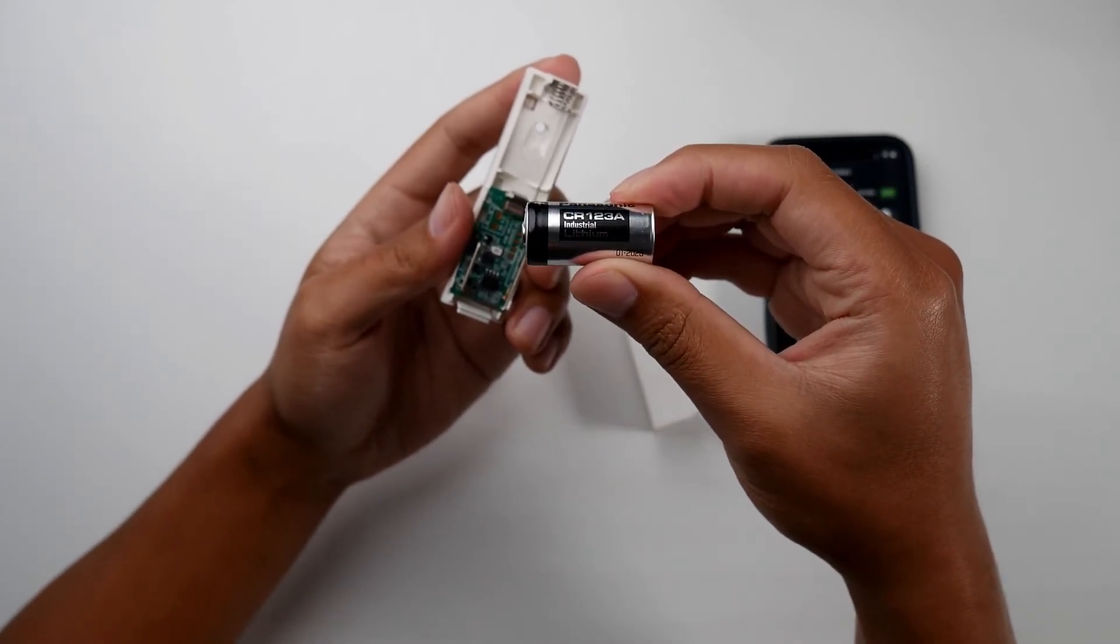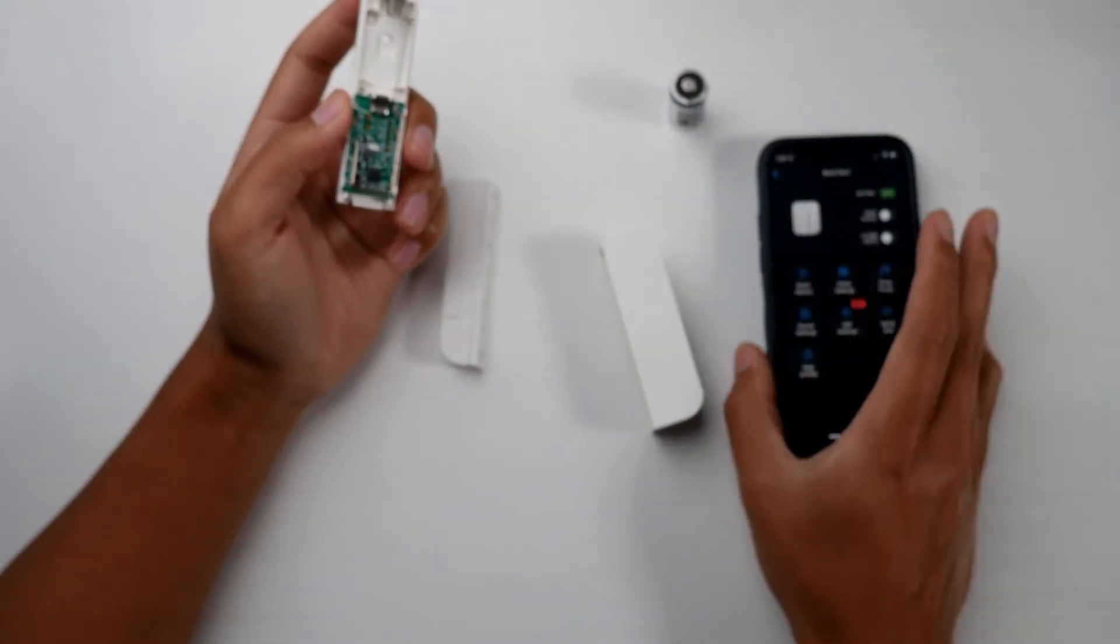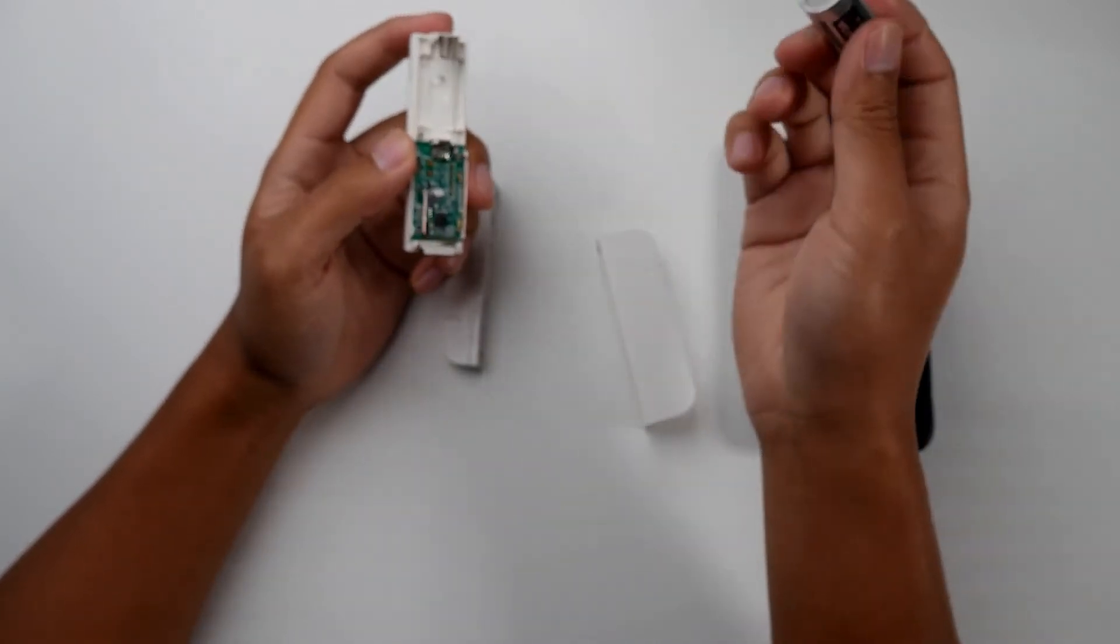I'll have a link below so you can pick one up from Amazon. You may get a notification saying that your sensor is being tampered with - that's normal. After that, pop in the new battery.